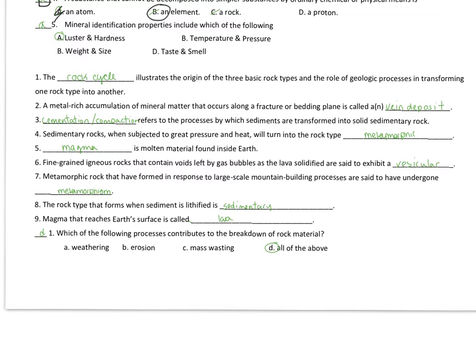So, as the lava solidifies, are said to exhibit a vesicular texture. A vesicular texture. If there are little voids, the two rocks, by the way, would be scoria, if it's mafic, and pumice, if it's felsic. Scoria and pumice.